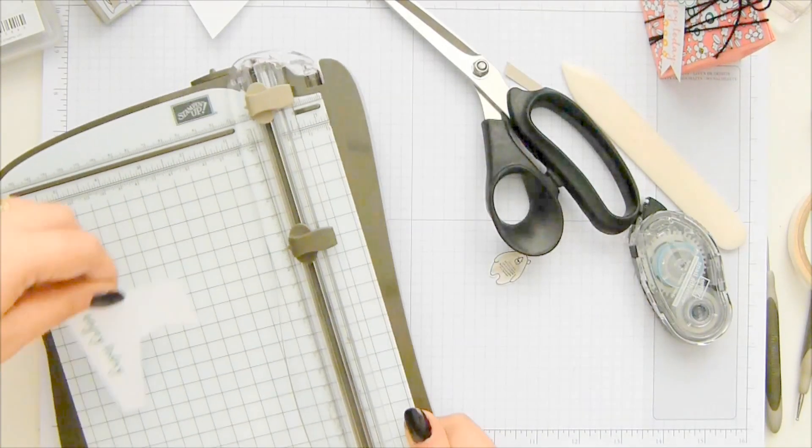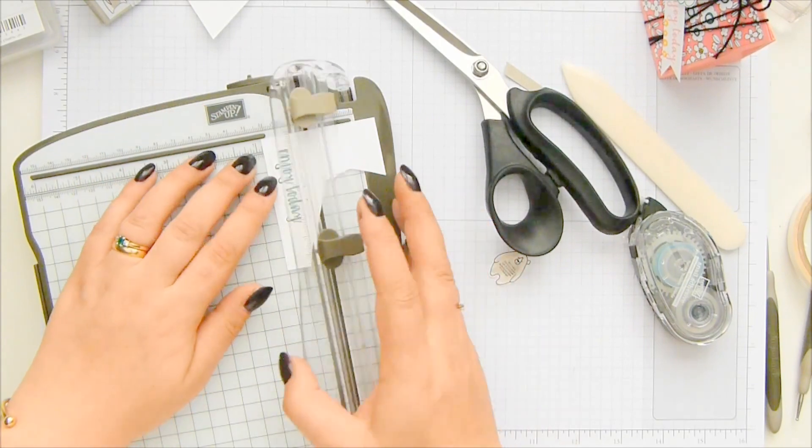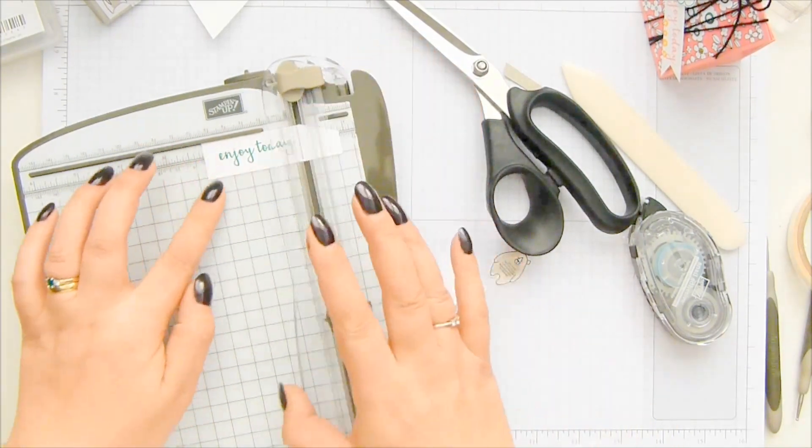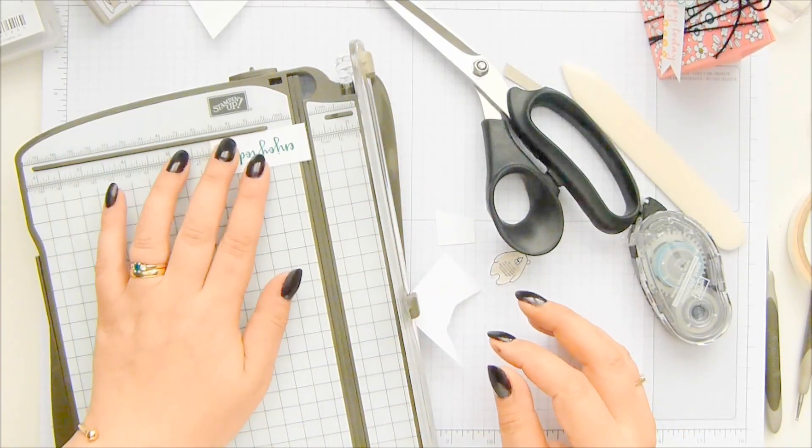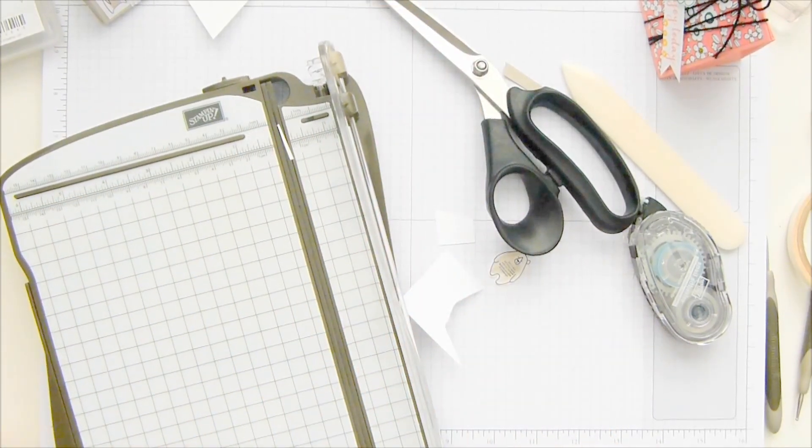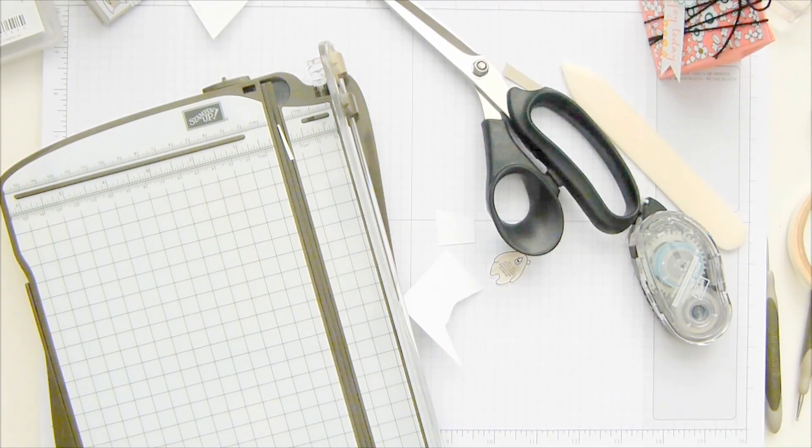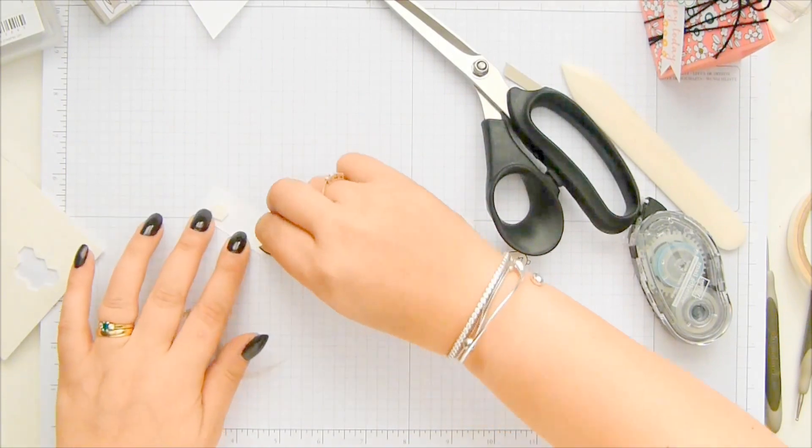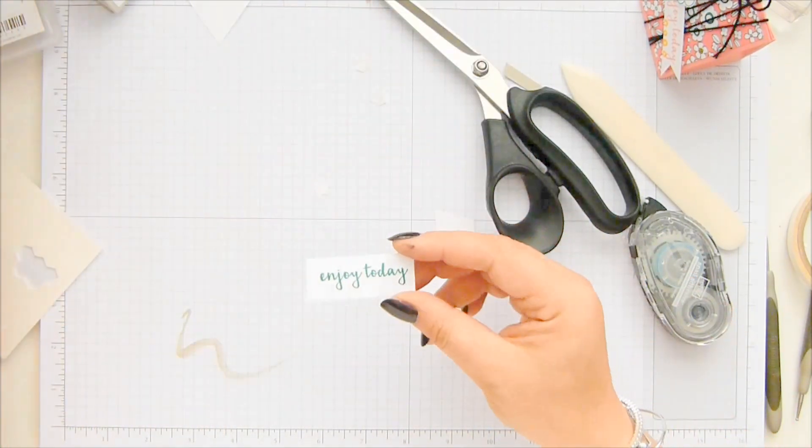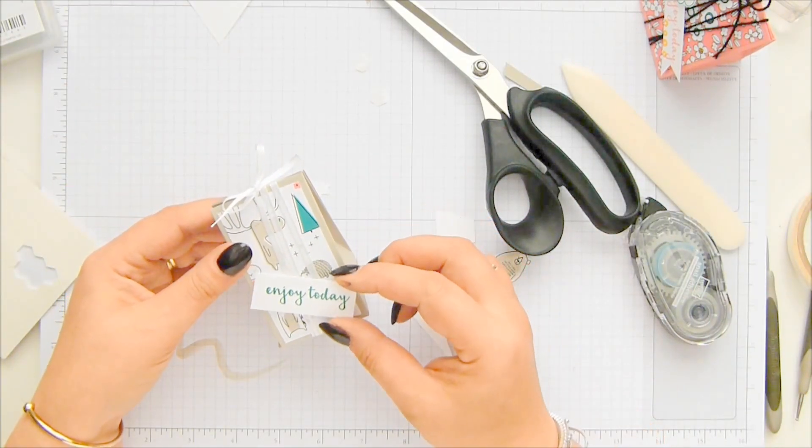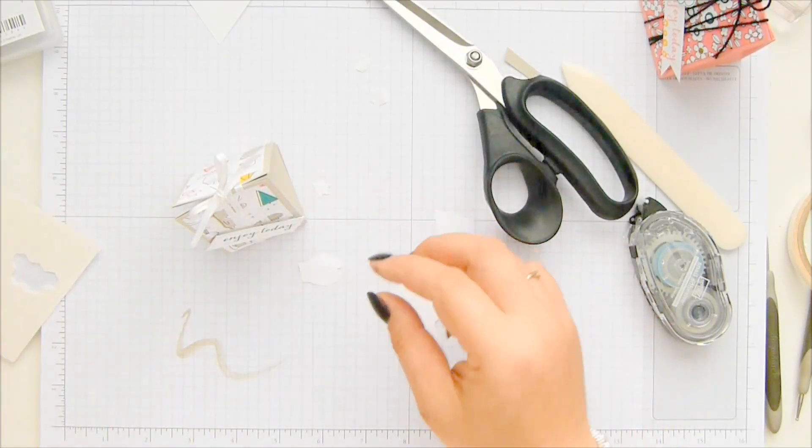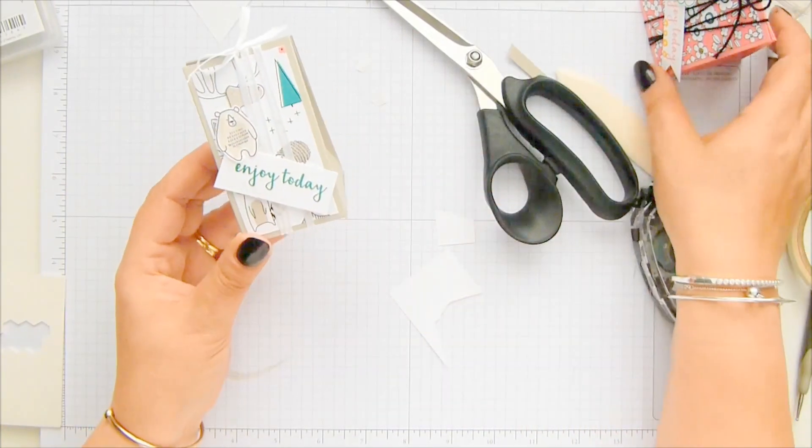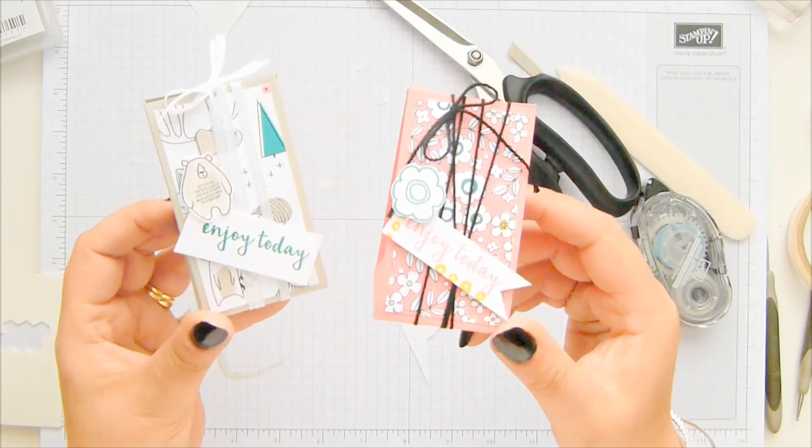All I can do now is trim off that excess there. Now, that excess there. And then I've got a little bit too much on that side. And I can put that on the front with some dimensionals. So, enjoy today. And I can put my little bear up there too. I'm proud of myself. I fussy cut something. My little bear up there. You can't see the hedgehog at all now. What do you think? I like that. That's too cute.